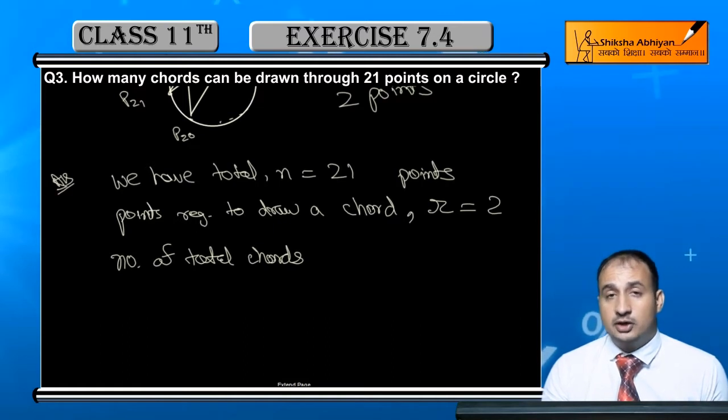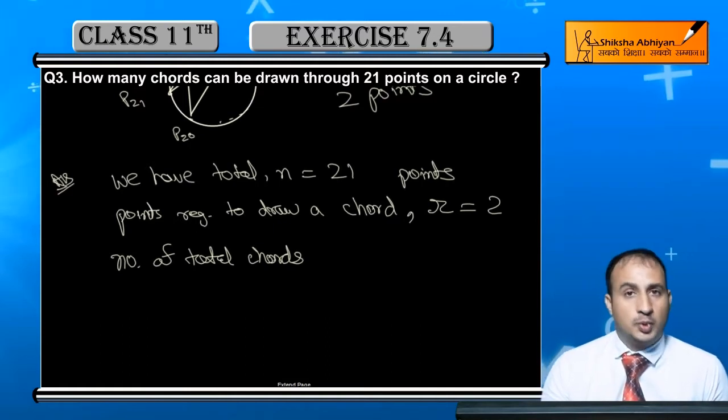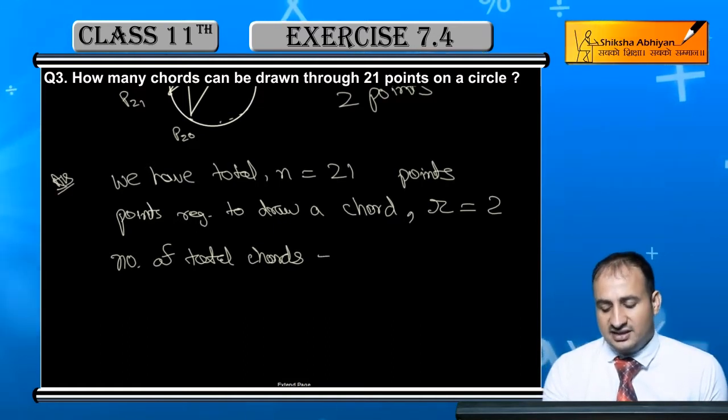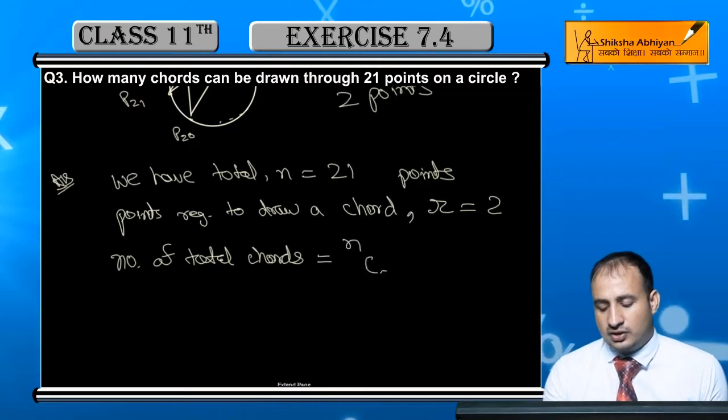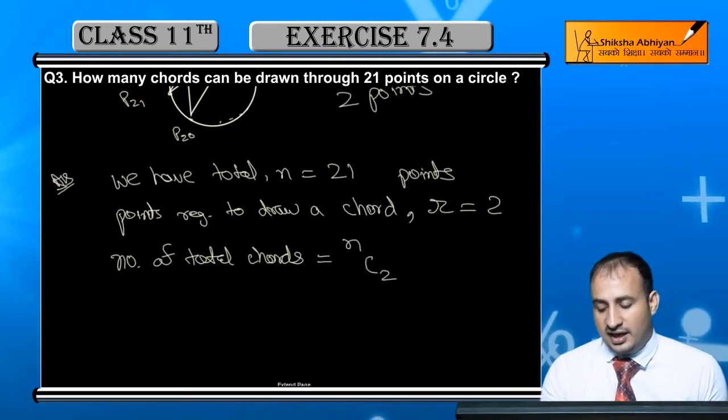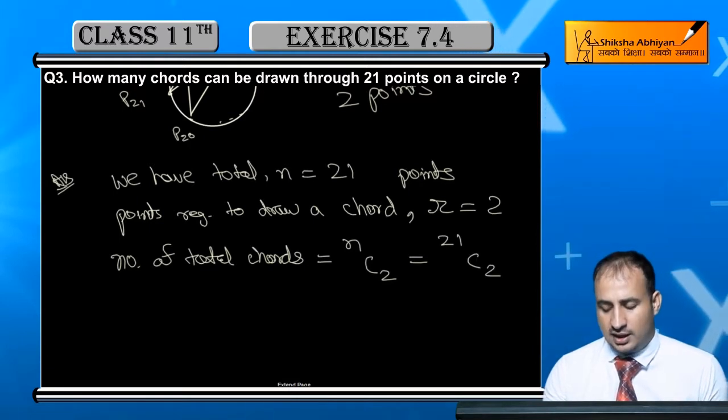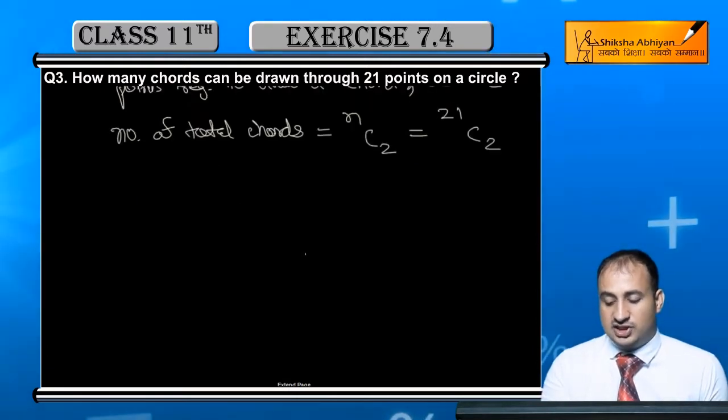Total chords will be selecting 2 points from 21 points, that is nC2. Since n is 21 here, it becomes 21C2. Simple calculation, now let's solve this.